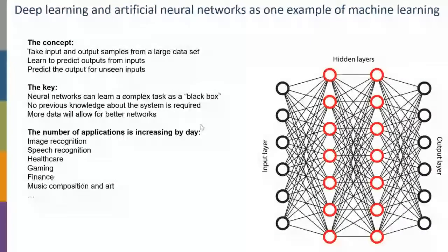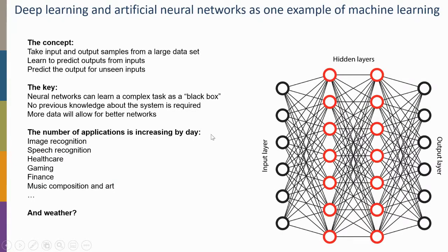The number of applications for neural networks is increasing every day. You've likely heard about image recognition, speech recognition, healthcare, gaming, and finance applications. Machines can now beat humans at Go, for example. The question is: how does this transfer to weather? How does this new set of tools make a difference for weather and climate predictions?